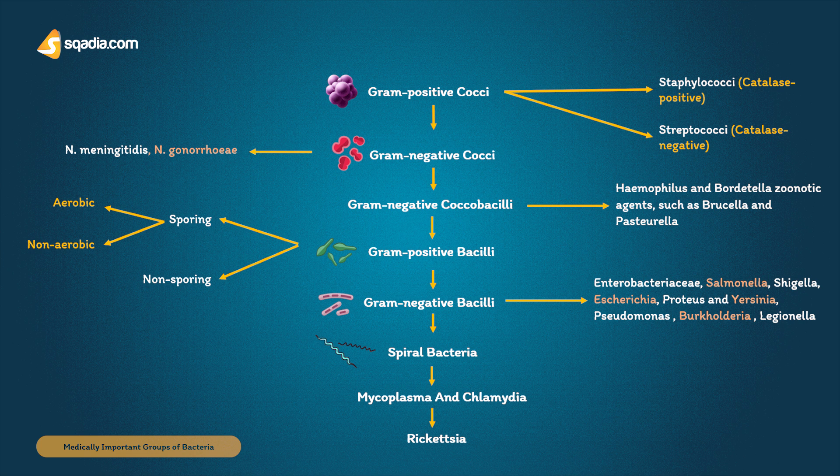Pseudomonas and Burkholderia are environmental saprophytes that are naturally resistant to antibiotics and are important hospital pathogens. Legionella lives in the environment and water but can cause human infection if conditions in the built environment allow it to gain a foothold.